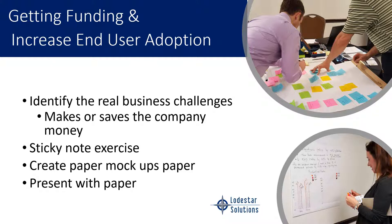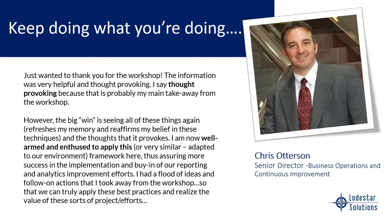When you're looking to get funding and increase end-user adoption, identify several business challenges that make or save the company money. We have a whole workshop on this with new dates being announced shortly. In our workshops, people work with sticky notes to identify what business challenges can really make or save the company money, then learn how to do the sticky note exercise, paper mock-ups, and even how to present with paper.